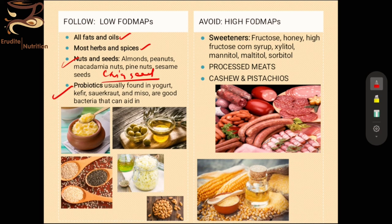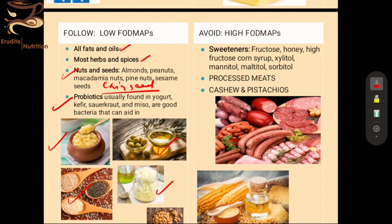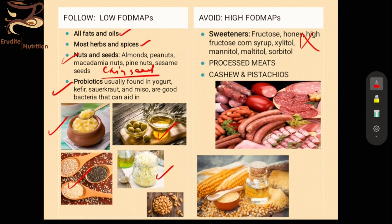Probiotics are very important — they establish a healthy microbial flora in your stomach and gut. If you are suffering from chronic diarrhea, most of your healthy bacteria has been washed out, or they may have been depleted by antibiotics, so probiotic foods are very helpful. Desi ghee, olive oil, and chia seeds, as well as other fermented foods, are good options. We are going to avoid all artificial and natural sweeteners — fructose, honey, corn syrup, xylitol, mannitol, maltitol, and zero-calorie sugars — as well as all types of processed meats like ham or sausages.